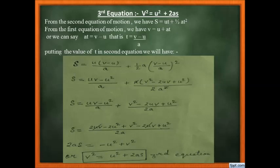Rearranging: v² = u² + 2as. That is the third equation of motion. It is not difficult — just practice it 3–4 times and it will become easy. So all three equations are: (1) v = u + at; (2) s = ut + ½at²; (3) v² = u² + 2as. These apply to uniformly accelerated motion.